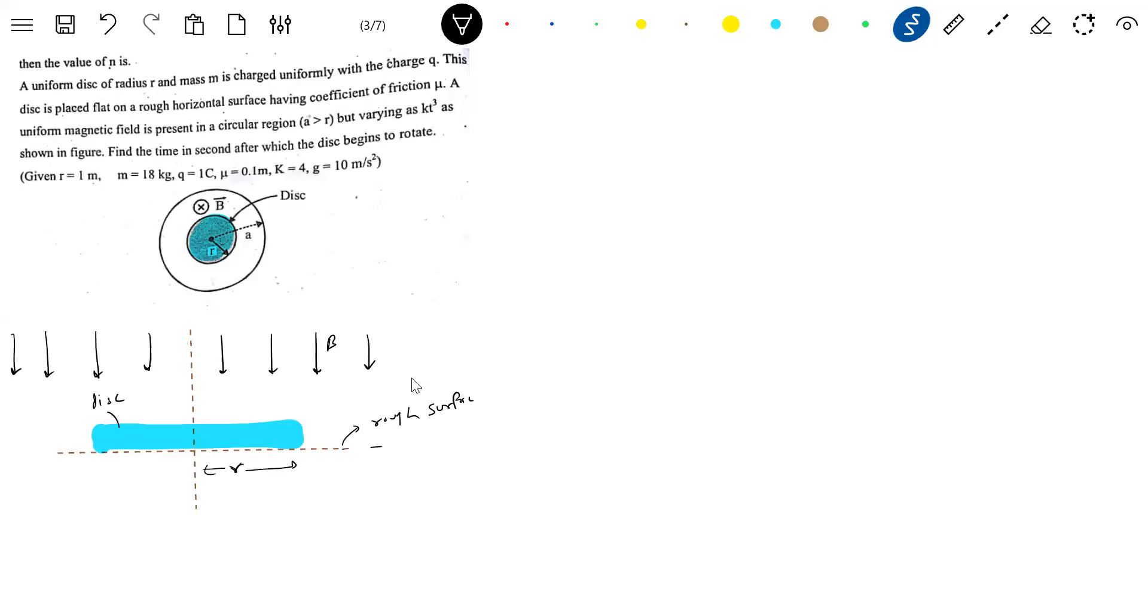Non-conducting uniform disc charged uniformly with charge Q. The charges are present on the surface. It's a uniform disc. There are charges present. You must have all these basic ideas.